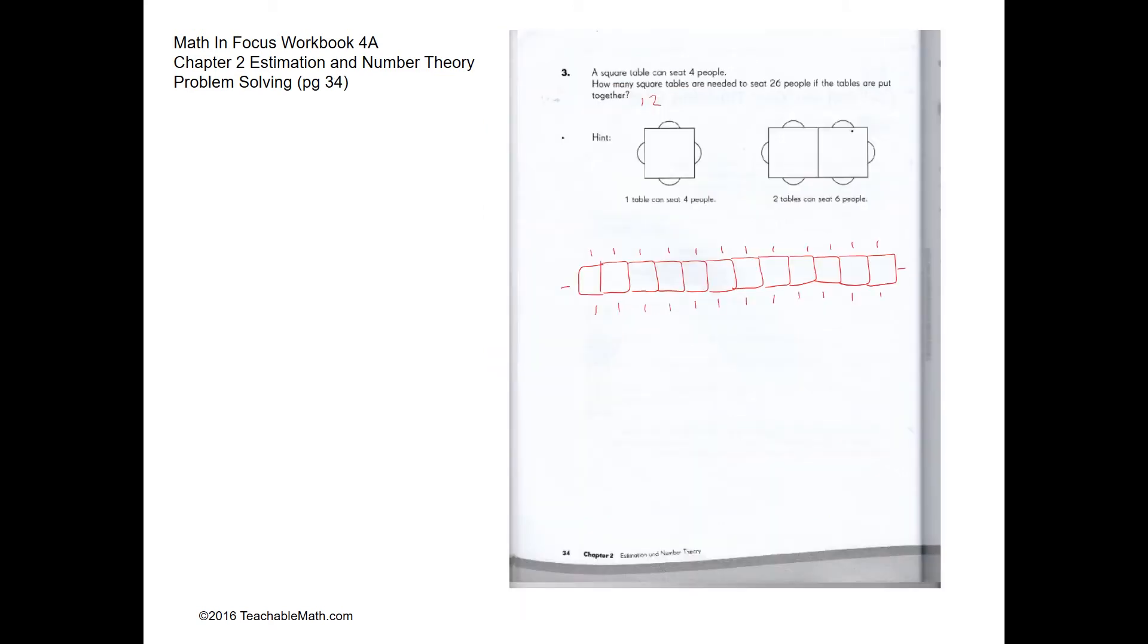Question 3. A square table can seat 4 people. This is a square table and you can seat 4 people: 1, 2, 3, 4. In this case, if we have two tables arranged this way, we can sit 1, 2, 3, 4, 5, 6 people.